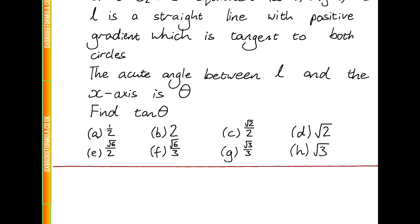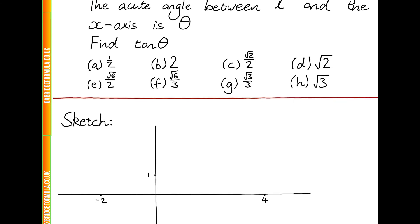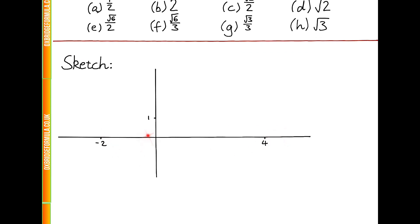So, let's begin by drawing a set of axes with these points marked, and we can therefore mark the centres of the two circles, and then draw the circles in. So, this is circle C1, and this is circle C2.